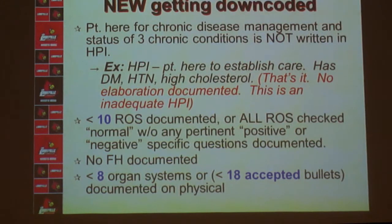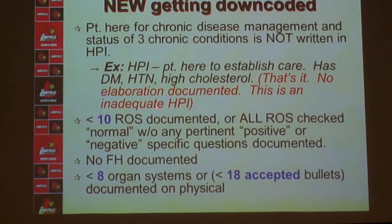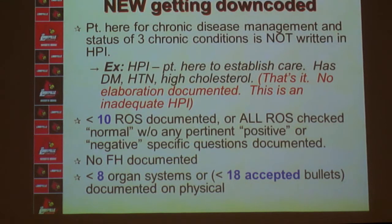In summary, the most common reasons you may unnecessarily get down-coded from a Level 4 new patient: inadequate HPI — either forgetting to document the status of three chronic conditions, or not describing a primary chief complaint by four or more modifiers; documenting fewer than ten review systems; forgetting family history; or examining fewer than eight organ systems. Any one of those things will prevent an appropriate new Level 4 patient from being reimbursed what you deserve.